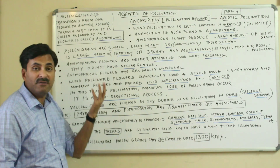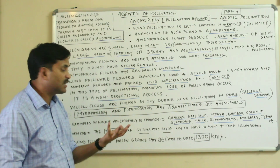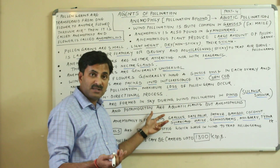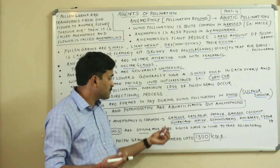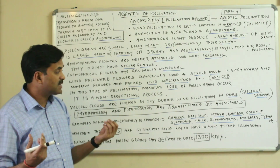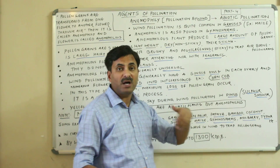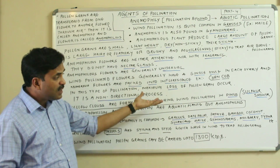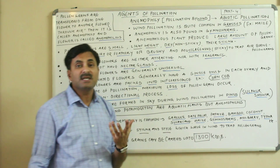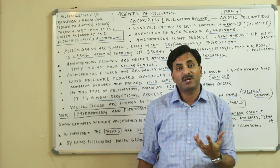Wind pollination can carry pollen grains up to 1300 kilometers. Examples of plants showing anemophily include grasses, date palm, papaya, bamboo, coconut, sugarcane, maize, gymnosperms, mulberry, and Typha. This video was based on anemophily — how pollination occurs by wind. In coming videos, we will discuss various other agencies of pollination.